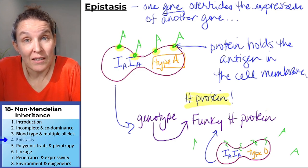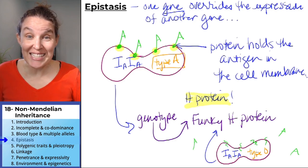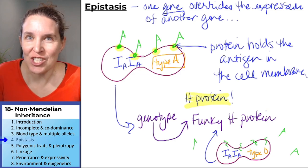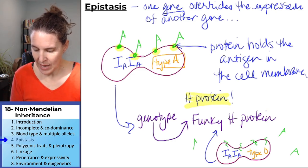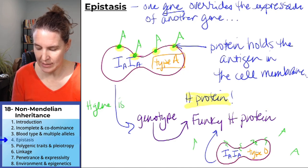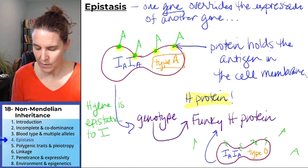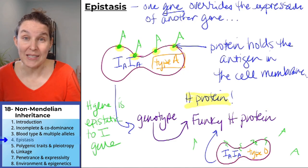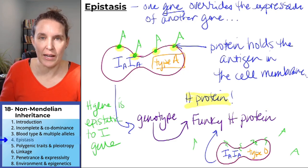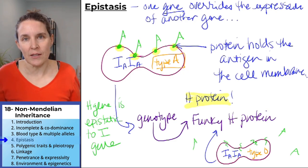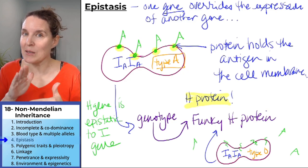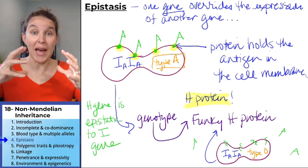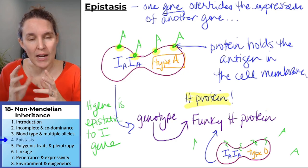But they're missing a different gene that's necessary. The H gene is epistatic to the I gene. We should write that down too. H gene is epistatic to the I gene. The presence of H is necessary for the expression of I. So you're going to get a weird phenotype that doesn't match the expected genotype when you have epistatic interactions between genes.